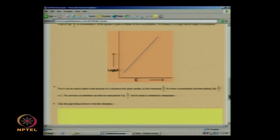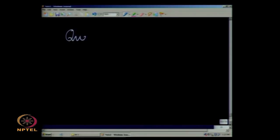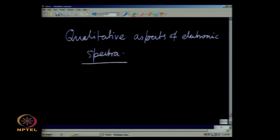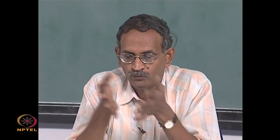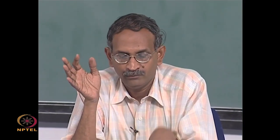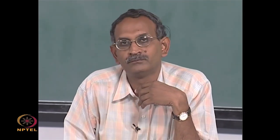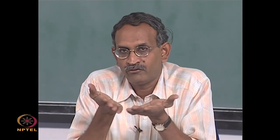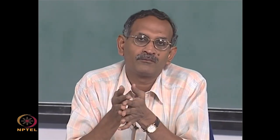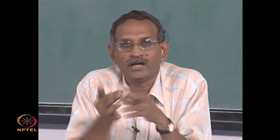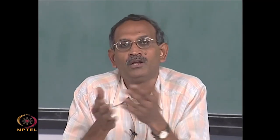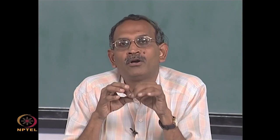Now let us get to the last part very quickly, namely qualitative aspects of electronic spectra. The most important part that I would like you to be familiar with in electronic spectra is the Franck-Condon principle. Please recall that electronic transitions require a lot of energy — we need visible to UV light. Vibrational motion of the molecule is in the infrared range, and rotations of the molecule take place at even much lower energy.